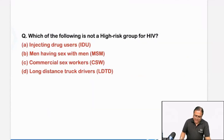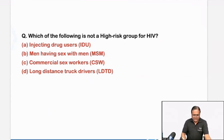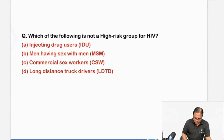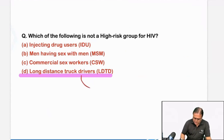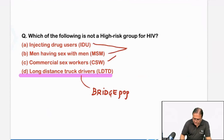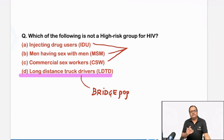Which of the following is not a high-risk group for HIV? This was an easy question — a repeat question from a previous paper. If you attended the INICET session yesterday, this was there also. Long-distance truck drivers, according to the National AIDS Control Program, are bridge population. When we look at the high-risk groups, how do they transmit disease to the general population? It is via the bridge population. Long-distance truck drivers come in contact with commercial sex workers — these are the bridge population, who take the infection back to their spouses and homes.